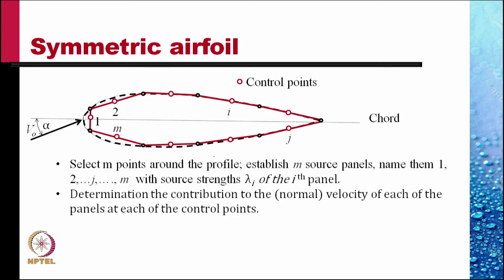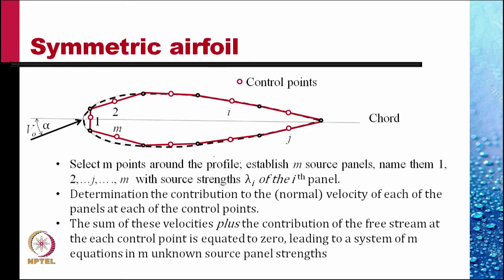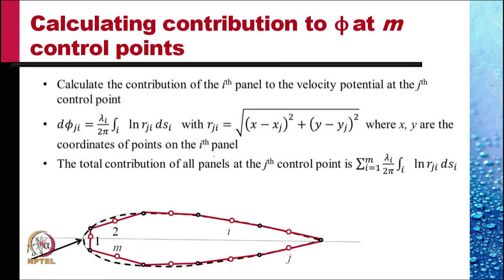We next do the determination of the contribution to the normal velocity of each of the panels at each of the control points. The sum of these velocities plus the contribution of the free stream at each control point is equated to zero, leading to a system of m equations in m unknown source panel strengths.